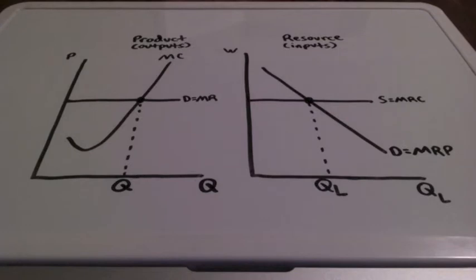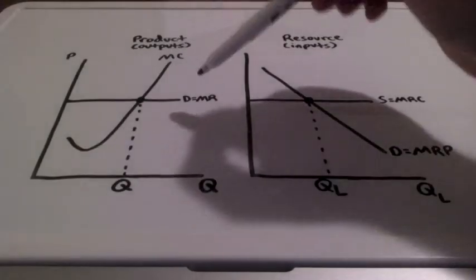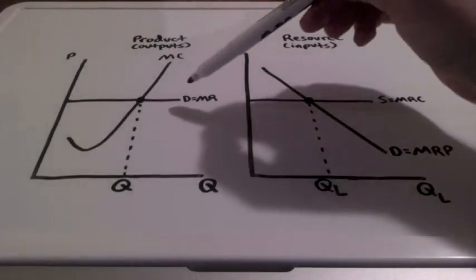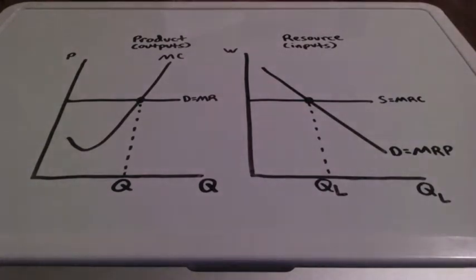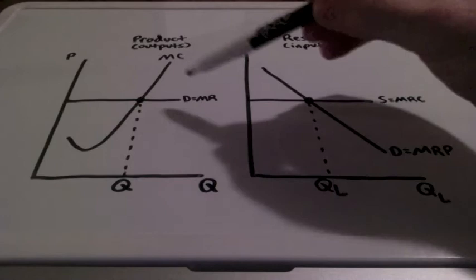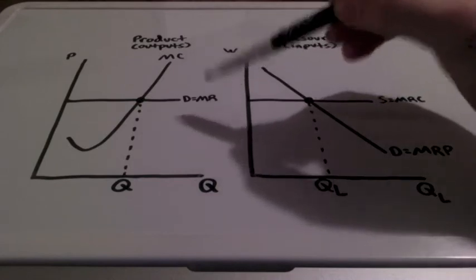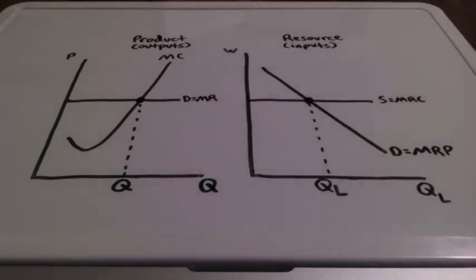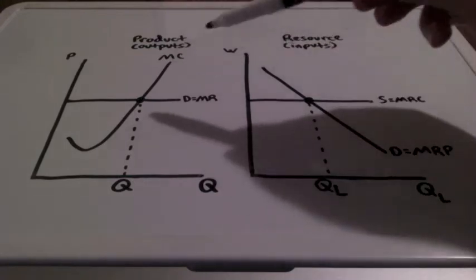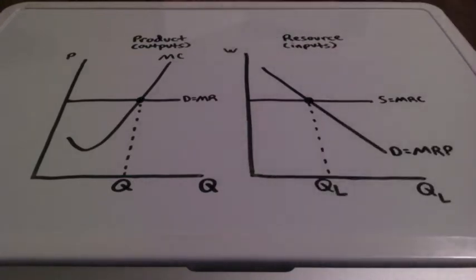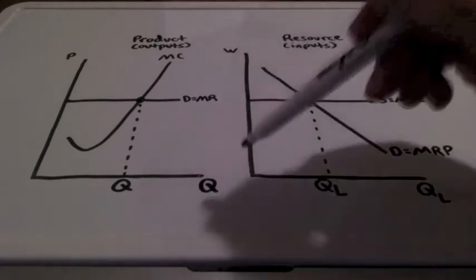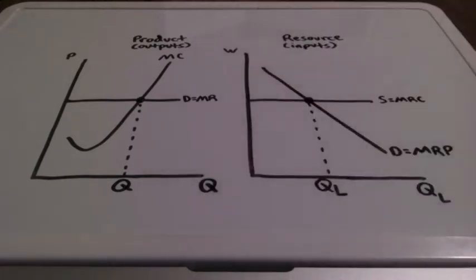In the product market, our demand curve represents what consumers are willing to pay for a particular good or service. It's going to equal marginal revenue in a perfectly competitive market, which is the additional revenue for each additional quantity of output.